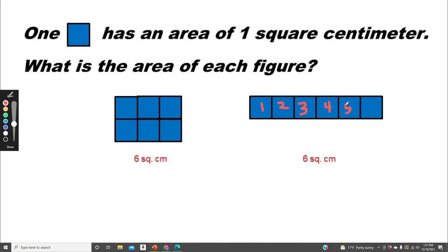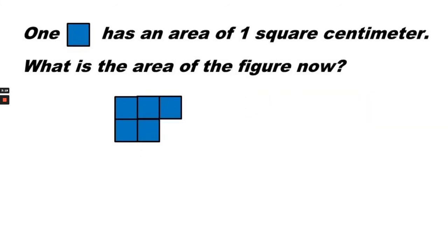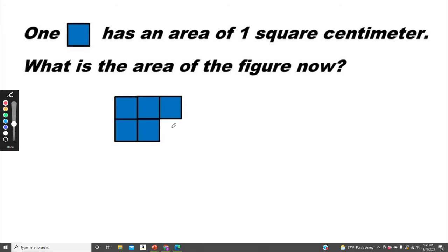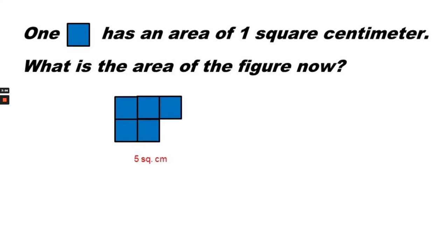One square has an area of one square centimeter. What is the area of the figure now? Well, it looks like one square was taken out, so now there are one, two, three, four, five squares. So what is the area? Yes, the area would be five square centimeters.